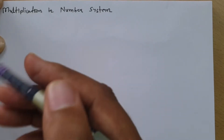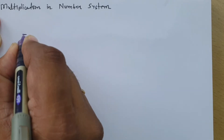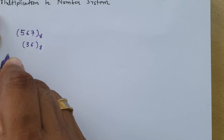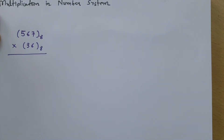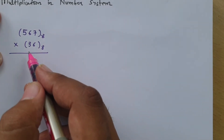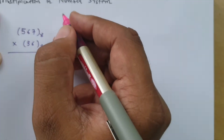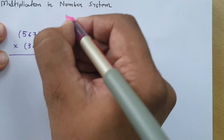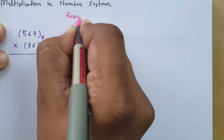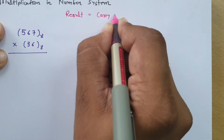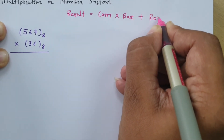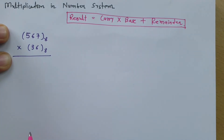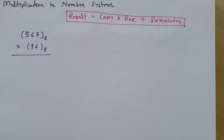Here is the first question. We have two octal numbers: 567 and 36, and we need to perform a multiplication operation between these two numbers. Before solving, one should know the basic formula, which I have already explained in my previous video. The formula is: result equals carry times base plus remainder. This is the basic formula we need to remember for both addition and multiplication operations. Let us solve this problem step by step.